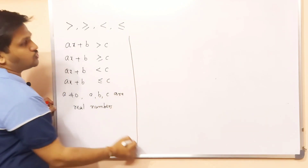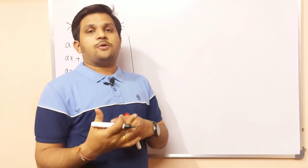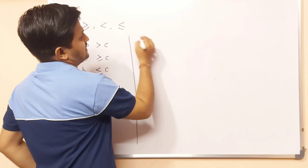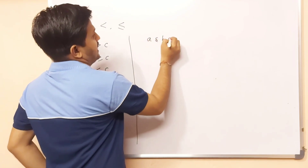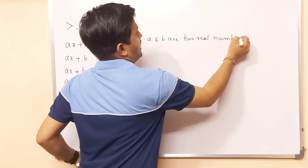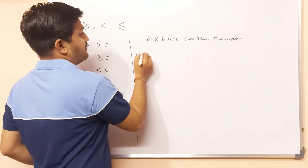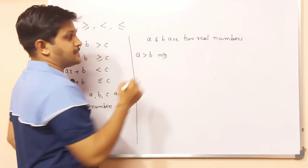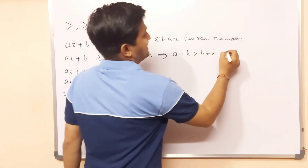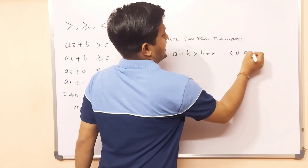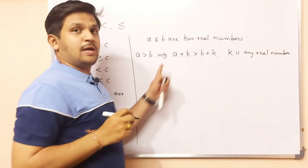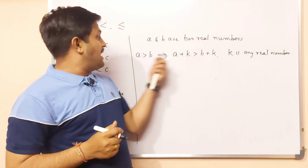Now the question is how to solve Linear Inequalities. During the process of solving, certain rules need to be followed. Let A and B be two real numbers. If A > B, this implies A + K > B + K, where K is any real number. This means you can add any number on both sides and the inequality will remain the same.